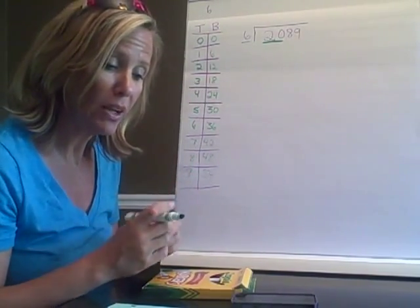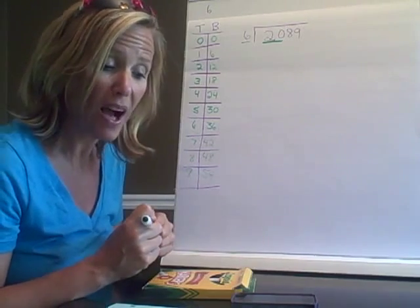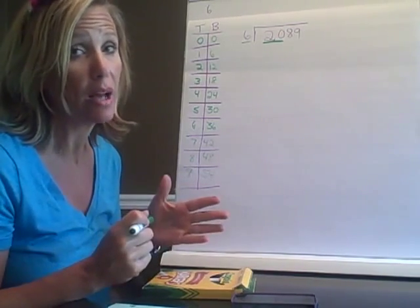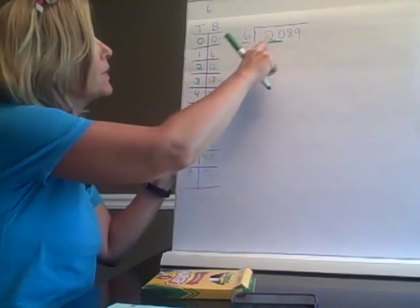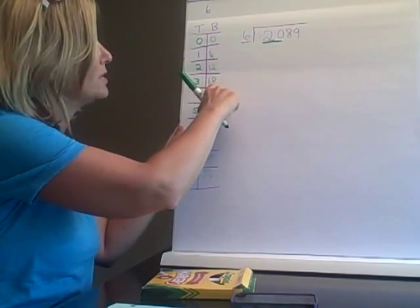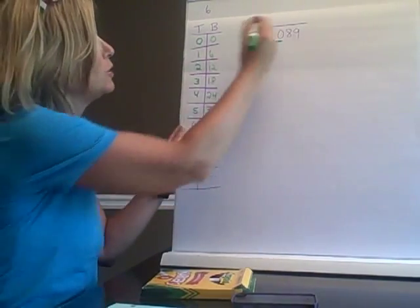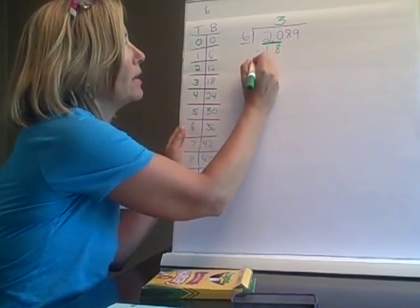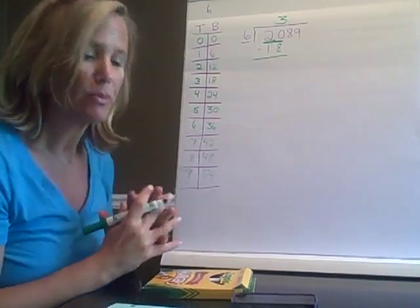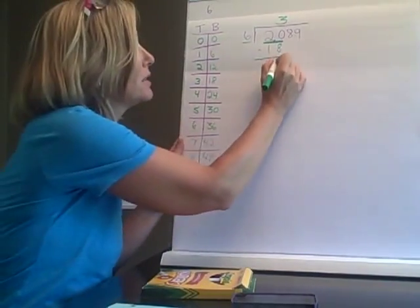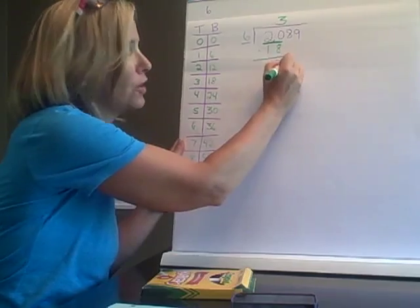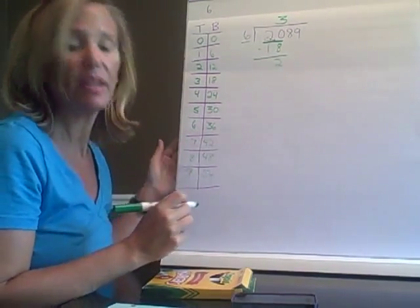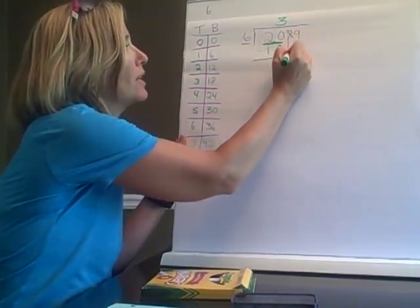Well then you are ready for steps four and five which you can combine because of your top bottom chart. You can think, the closest number to twenty without going over is eighteen. So I need to put three on the top and eighteen on the bottom. Now we've jumped all the way to step six which is subtract. Twenty minus eighteen is two.